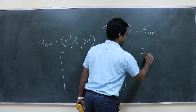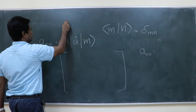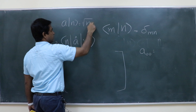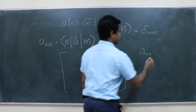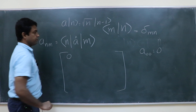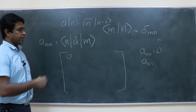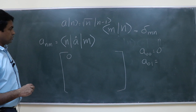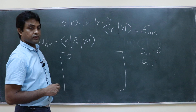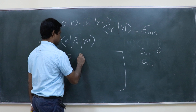What is a_00? Because a acting on ket n is root n ket n minus 1, and a acting on ket 0 is 0, so a_00 is 0. What is a_01? That is 1. So anything other than a_01 in that first row will be 0.